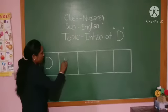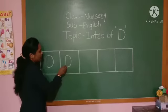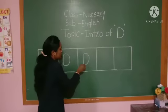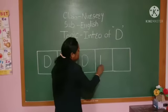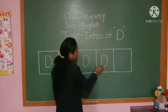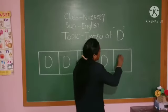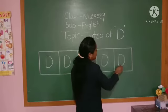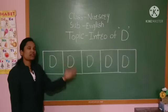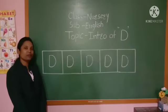See. D — doll. D — dog. D — dish. D — dog. Have you understood kids how to write D? In this way, you have to practice at your home. Thank you.